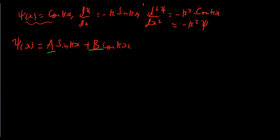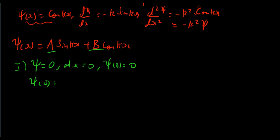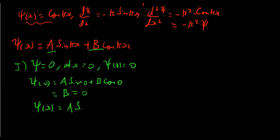Our first boundary condition is that psi equals zero at x equals zero. Substituting: psi of zero equals A sine of zero plus B cos of zero. Sine of zero is zero and cos of zero is one, so we get B. But we know that must equal zero, so B equals zero. We can now write psi of x equals A sine of kx, eliminating the cosine term.